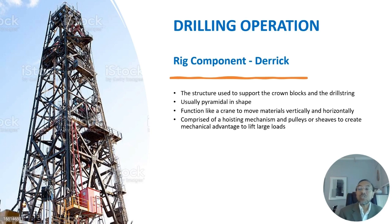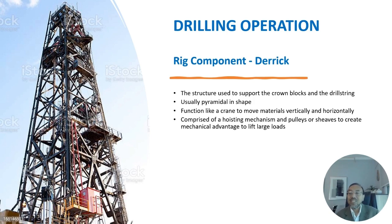Drill pipes are 8 to 10 meters long, so a derrick for 3 stands is taller than a 19-storey building. The substructure provides the height required for the blowout preventer stack below the rig floor. The derrick and substructure must have enough strength to support all loads including hook load, pipe set in the derrick and wind loads.